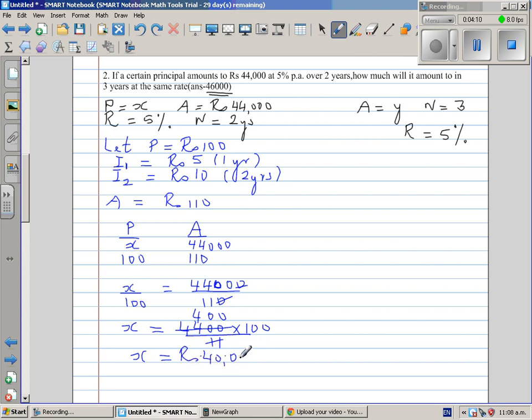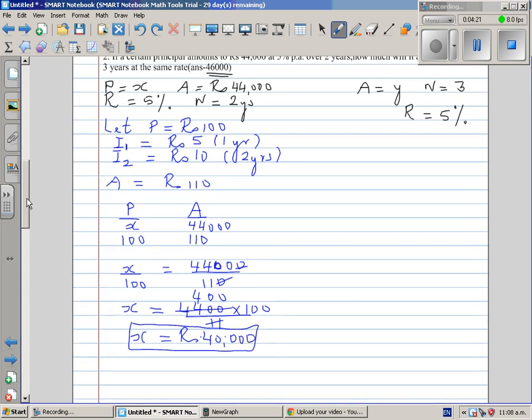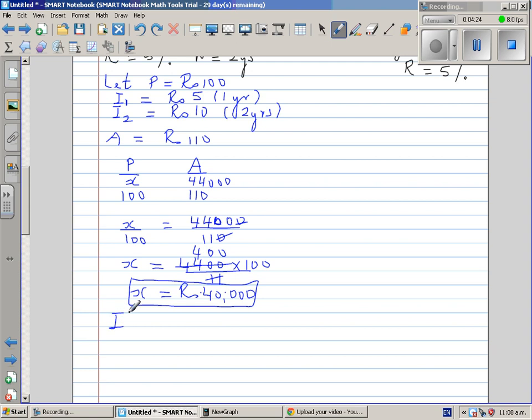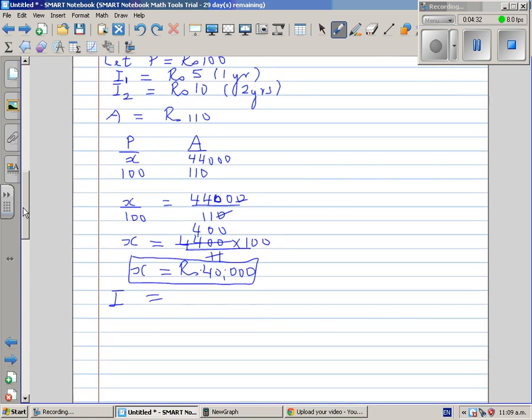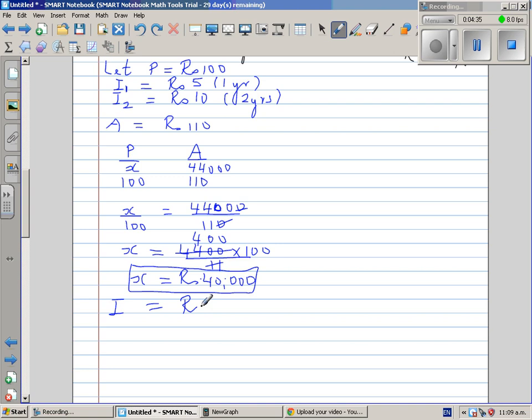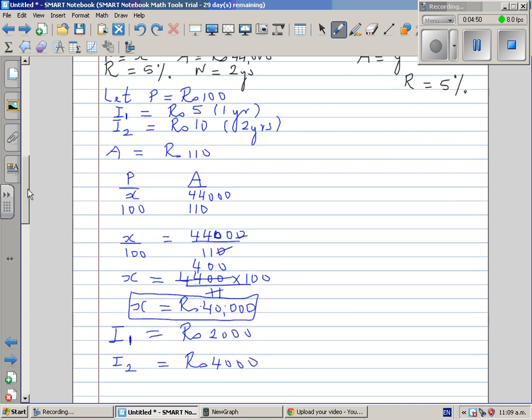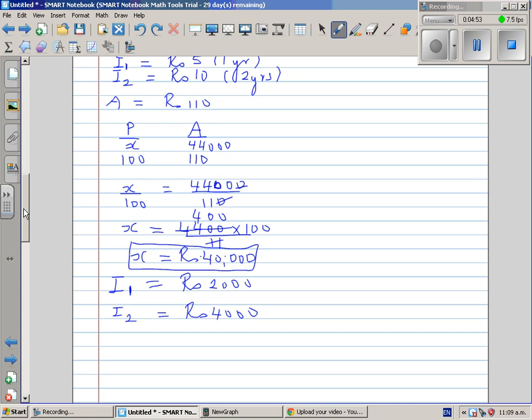X is equal to 40,000. So your principal started with, if you have 40,000 as principal, let's do oral calculation and confirm whether this is applied. So after one year, if it is 10%, you'll get 4,000. So as it is 5%, you'll get 2,000 rupees as interest for one year. And interest after two years, you will have 4,000. And that's right. So 44,000 is correct. So your principal is 40,000 rupees.